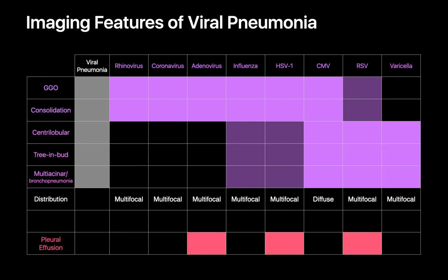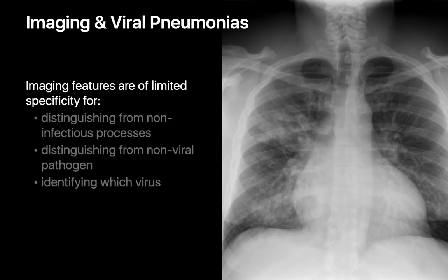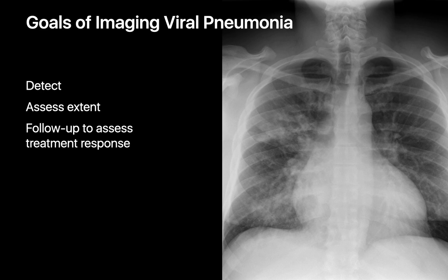Pleural effusions are relatively uncommon in the setting of viral pneumonias, but may occur with some adenovirus, HSV type 1, and RSV pneumonias. Not only is imaging of limited specificity if your aim is to distinguish between different types of viral pneumonia, but imaging is not that reliable for distinguishing between viral and non-viral pneumonias either. The role of imaging is to help detect viral pneumonias when they occur and to assess their extent or severity. Follow-up imaging can also provide a window into how well a viral pneumonia is responding to treatment.